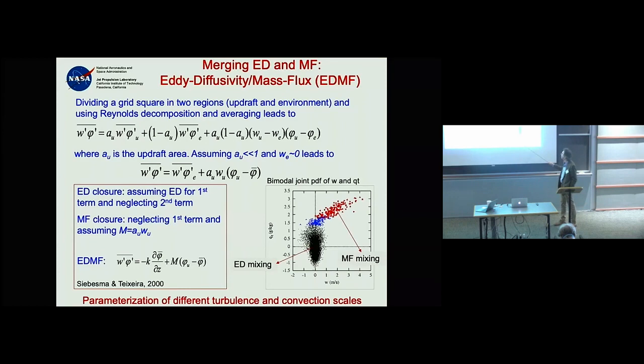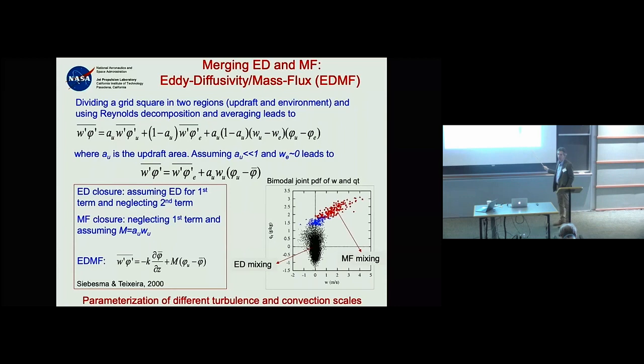You can also see this from a PDF perspective: doing the same horizontal cut about one kilometer above the surface and looking at the joint distribution of vertical velocity and total water minus the mean gives a distribution with a Gaussian environmental region and a very active tail.